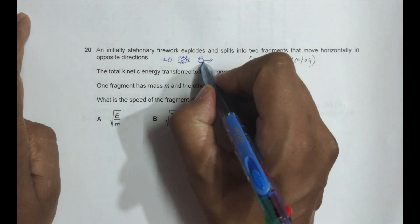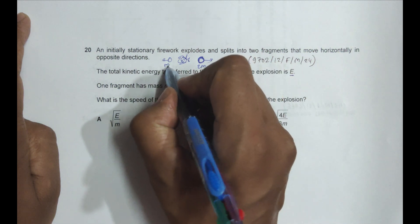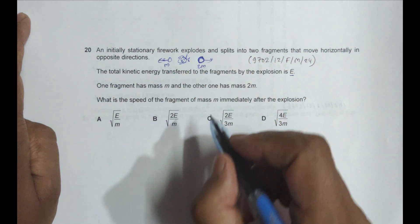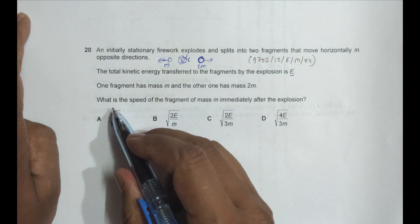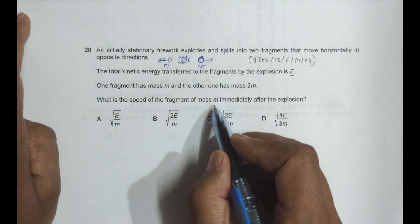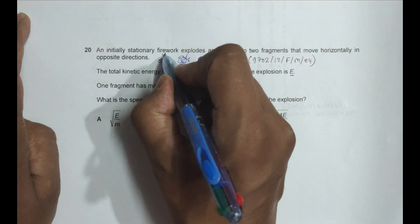One fragment has mass twice M and the other one has mass M. This thing has mass 2M and this thing has got mass M. The only information given is this is mass M, this is mass 2M. What is the speed of the fragment of mass M? We need to find its speed.